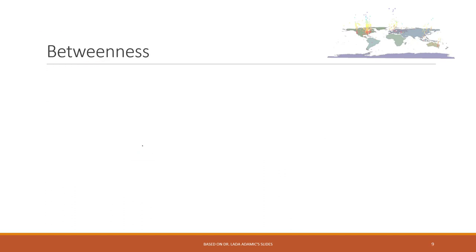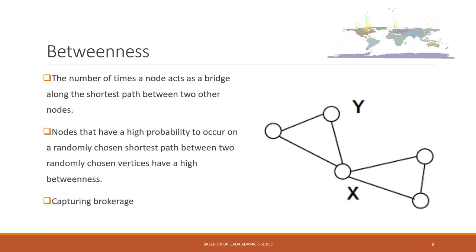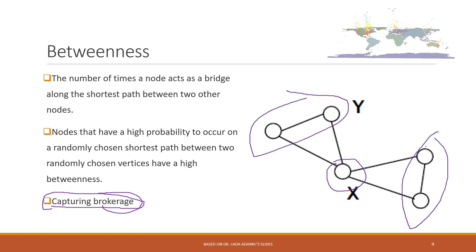The next centrality measure is called betweenness. Betweenness is the number of times a node acts as a bridge along the shortest path between two nodes. It captures how many times you serve as the connection — you serve as a brokerage. In this case, you can see that node X serves as the central contact and brokerage: if all the other nodes on both sides want to make connections with each other, they must go through X. So X has very high betweenness because X is the brokerage in this network. Betweenness captures how important you are as a brokerage.